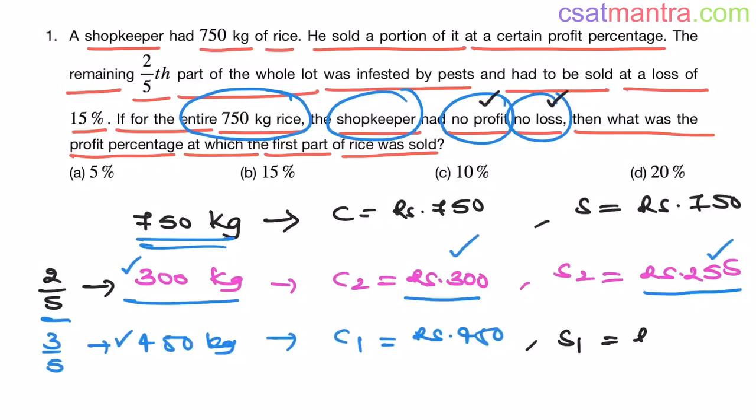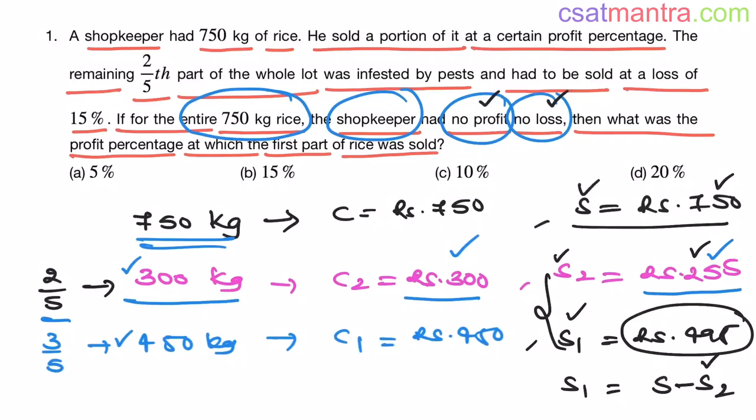Now, its selling price would be 495 rupees, my friends. Total selling price should match 255 plus 495 that equals 750. So, S1 is basically total minus S2. 750 minus 255 that is 495.